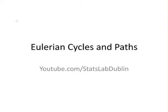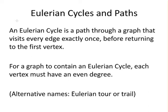In this presentation, we're going to look at Eulerian cycles and paths. An Eulerian cycle is a path through a graph that visits every edge exactly once before returning to the first vertex.